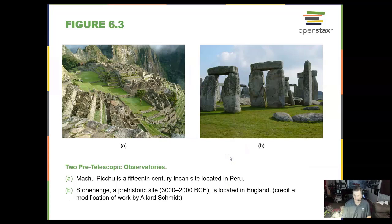Here are two pre-telescopic observatories. One is Machu Picchu in Peru. The other one is Stonehenge in England.